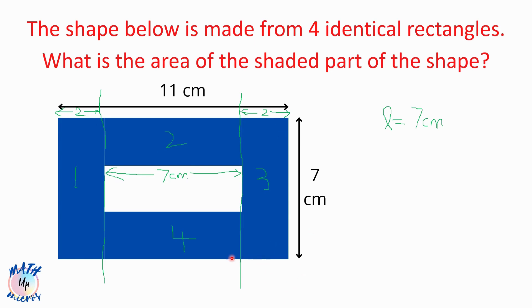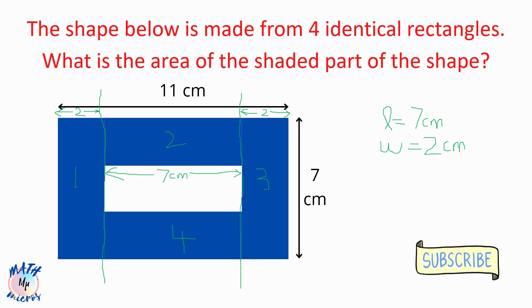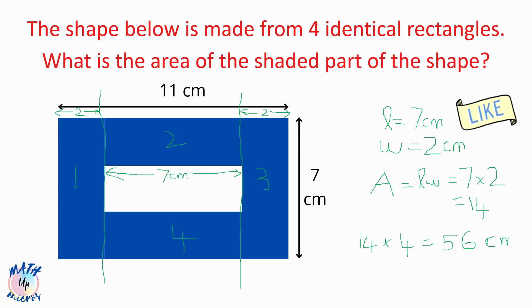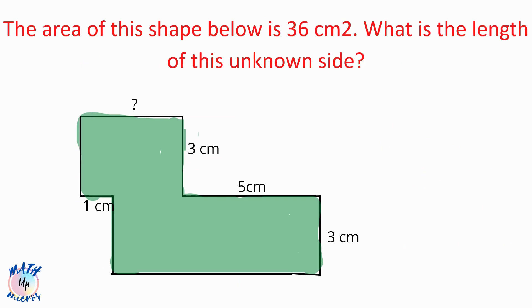Looking at the right rectangle again, it's obvious that the width is 2 centimeters. So the area of one rectangle is length times width, which is 7 times 2, equals 14. The area of all four rectangles is 14 times 4, which is 56 square centimeters. That is the area of the shaded part — 56 centimeters squared.